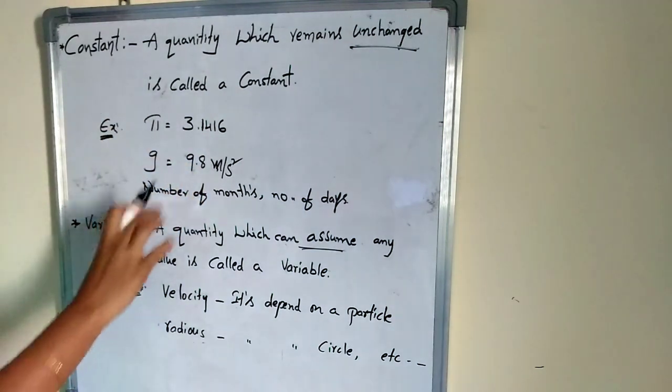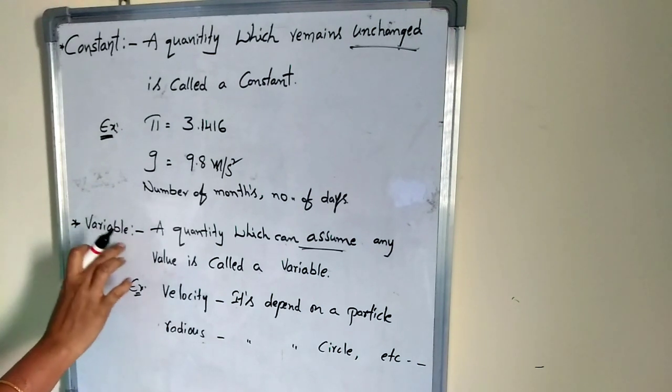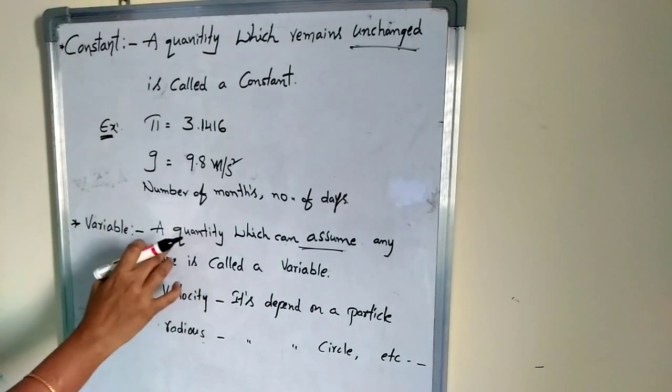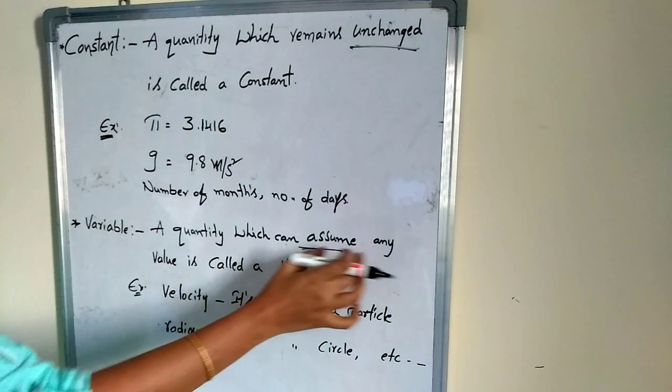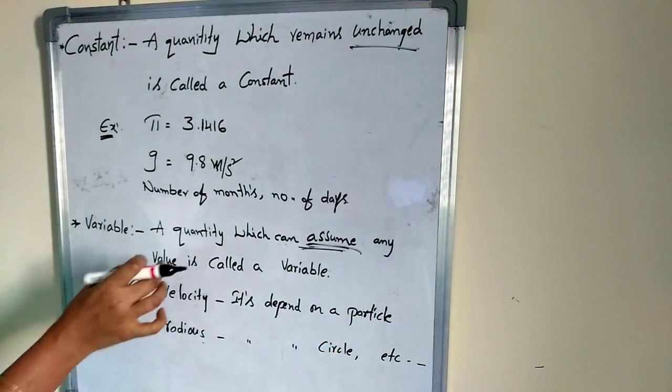Now coming to variable. What is a variable? Variable means a quantity which can assume any value - which we can assume any value is called a variable.